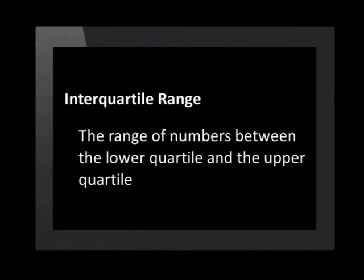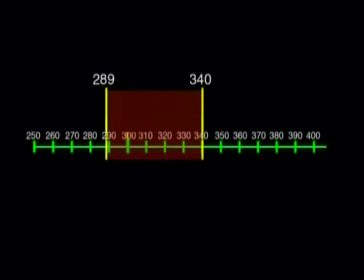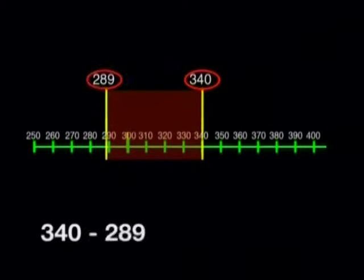But what do these quartiles tell us about how spread out the data is? The quartiles help us to find the interquartile range. The range of numbers between the lower quartile and the upper quartile is called the interquartile range. To find this range, we just find the difference between them. So the interquartile range of the Two-Good patties will be 340 minus 289, which is 51 grams.